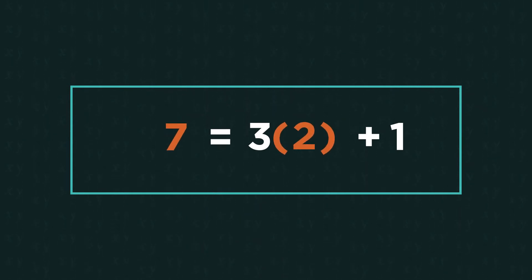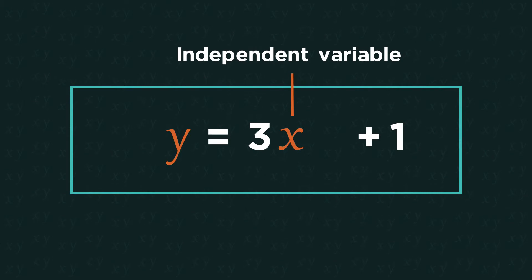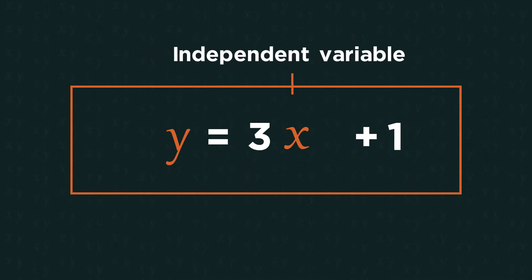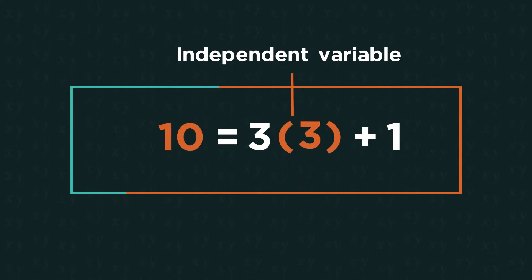Even more specifically we call the x the independent variable because we can choose any value of x randomly or independently. But the y is known as the dependent variable. It depends upon the value of x.